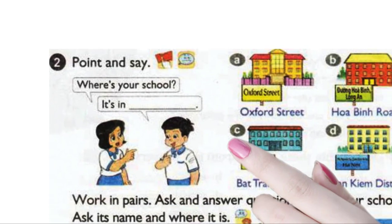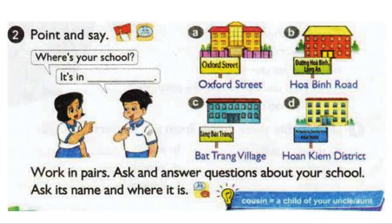Page 40. Activity 2. Point and say. Where's your school? It's in Oxford Street.